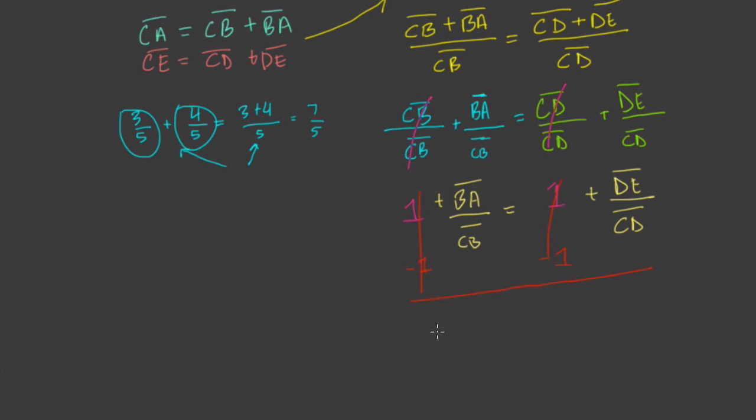And now we're left with this statement right here. Just cancel out. And we get BA over CB equals DE over CD. And let's see what that means.